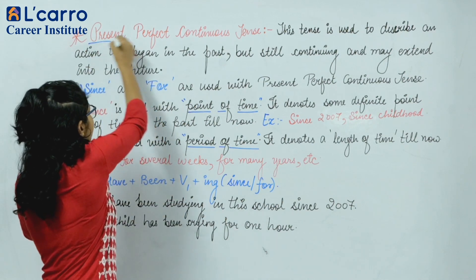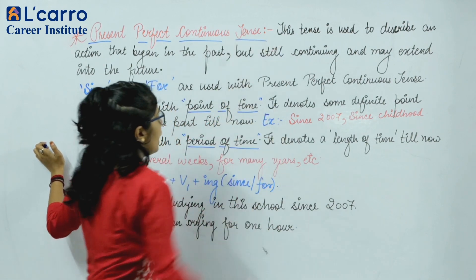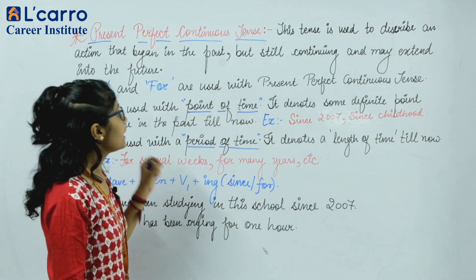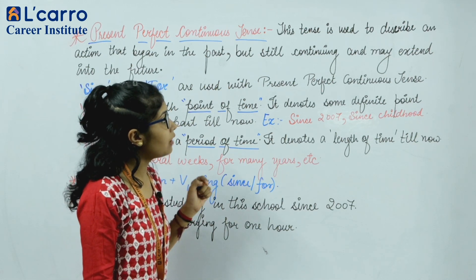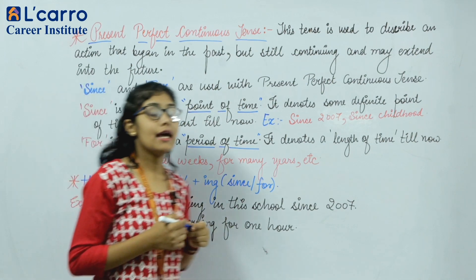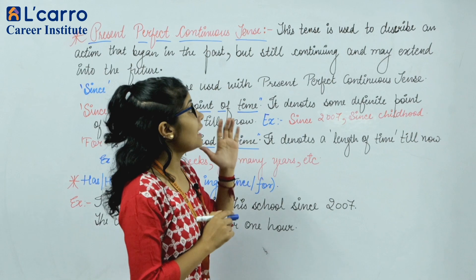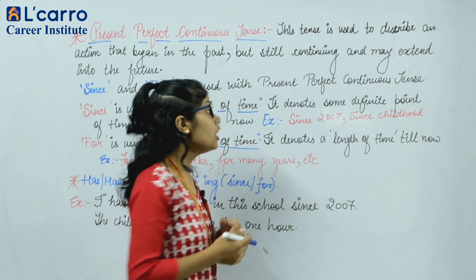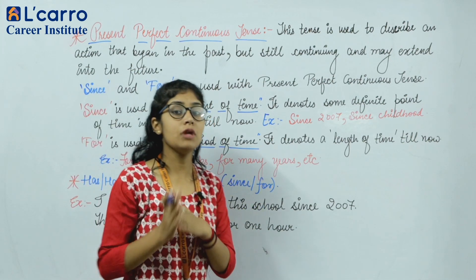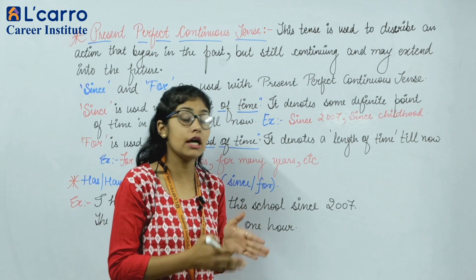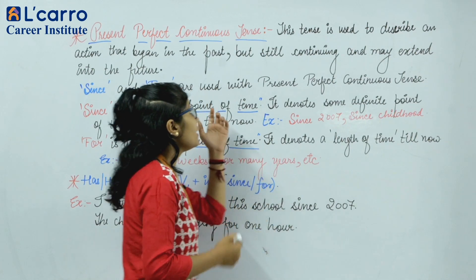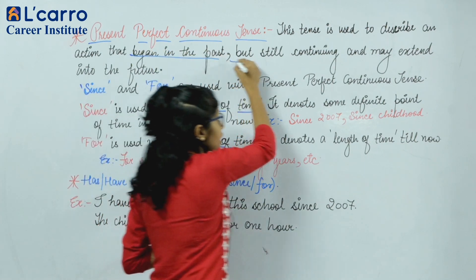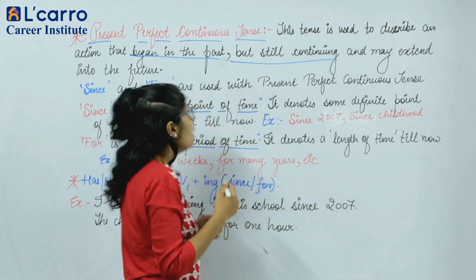This tense is used to describe an action that begins in the past but is still continuing and may extend into the future. Iska matlab yeh hai ki iske andar woh actions aate hain jo shuru to past mein huye the. Aur woh still continuing hain — even into the future.